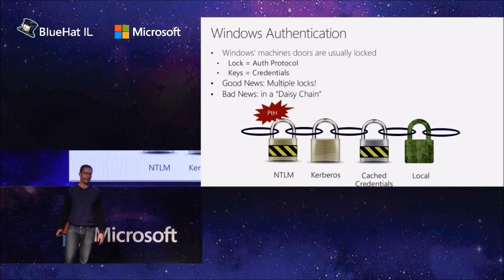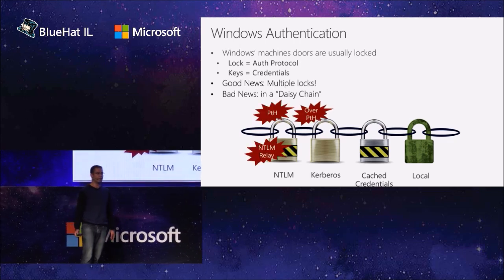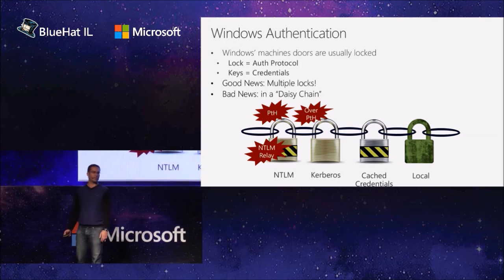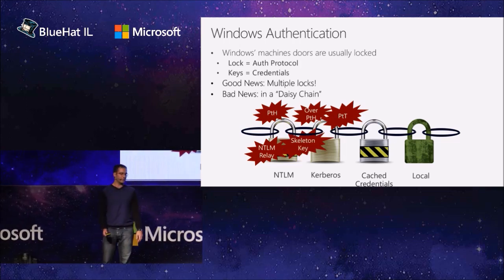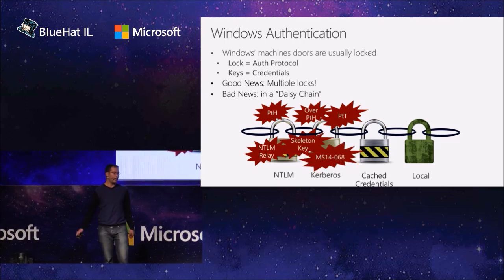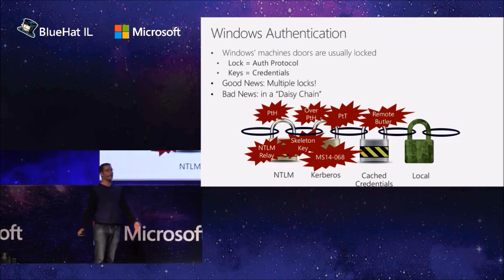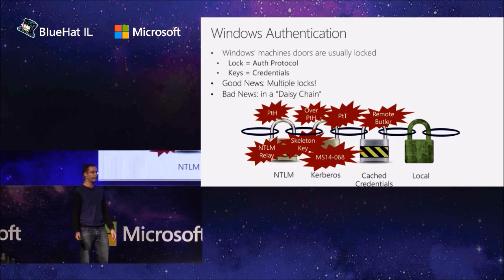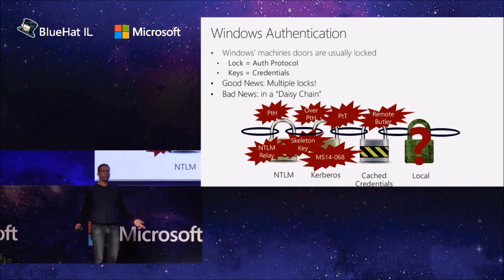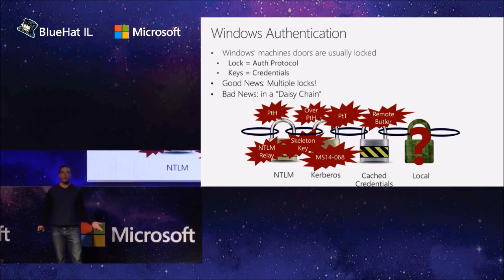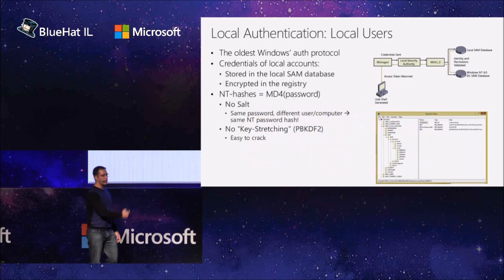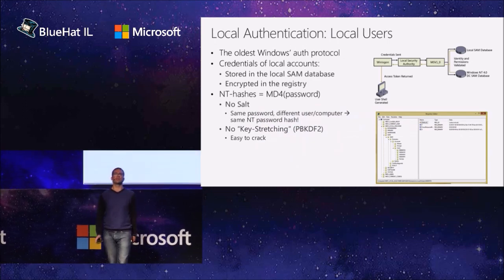There are many attacks already mentioned: pass the hash, NTLM relay, overpass the hash from Benjamin, pass the ticket for Kerberos, skeleton key, MS14-68, and even for cached credentials — Remote Butler. So what happened with local user authentication? What are the attacks there? Because it's also a lock, it should be a prime target for attackers, we guessed. But we couldn't find too much documentation about it, so we decided to shed some light on these dark corners.